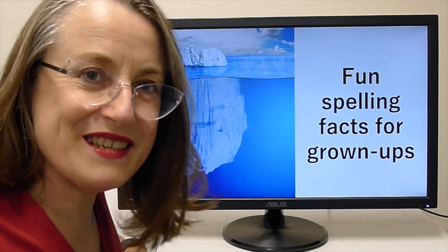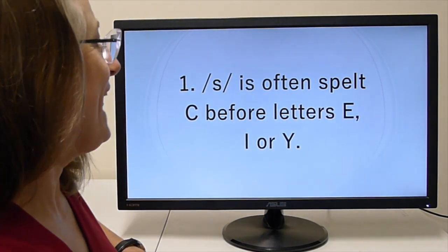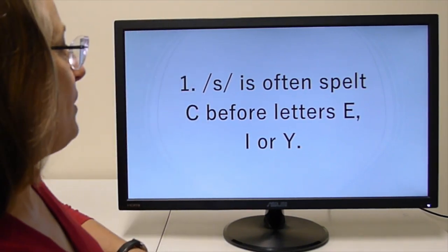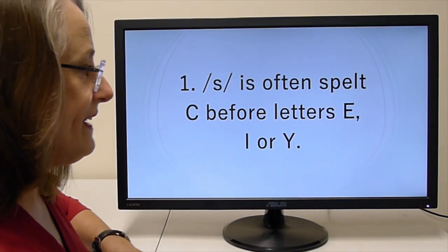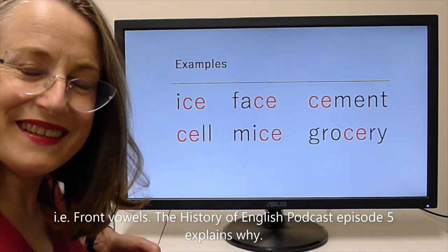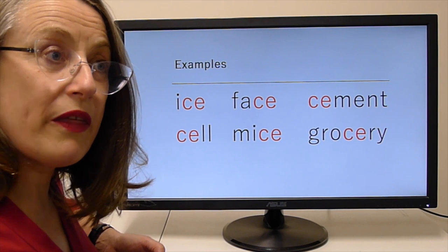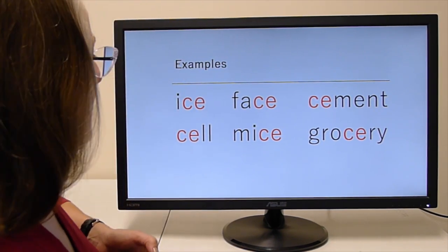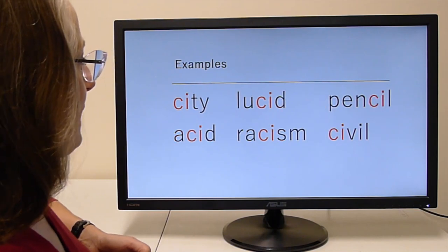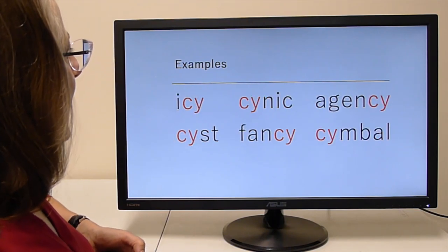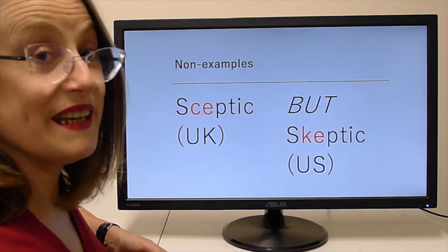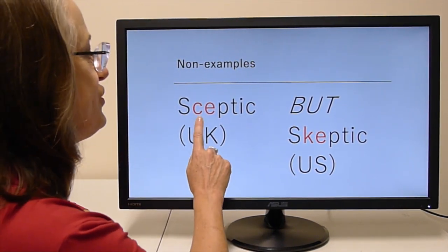The first factoid is the /s/ sound is often spelled with the letter C before the letters E, I, or Y. We usually teach with examples rather than rules — children will understand them better and they're gathering data to build their database of how spelling works. So we have CE, CI, CY.